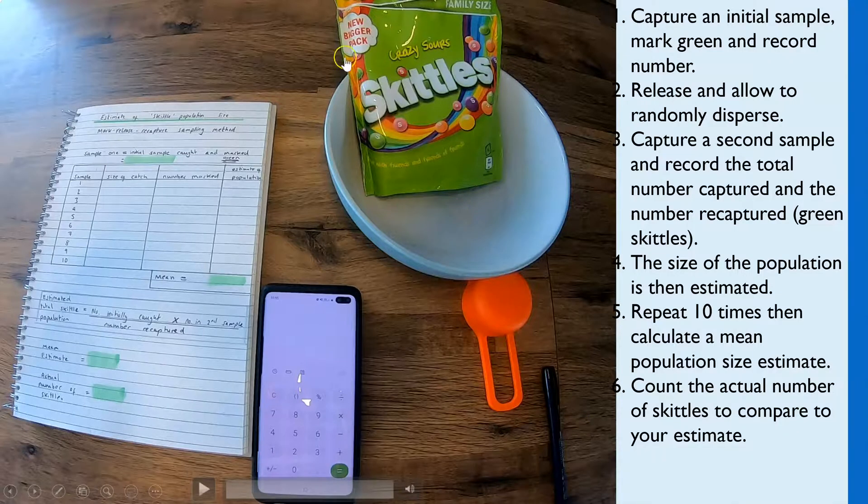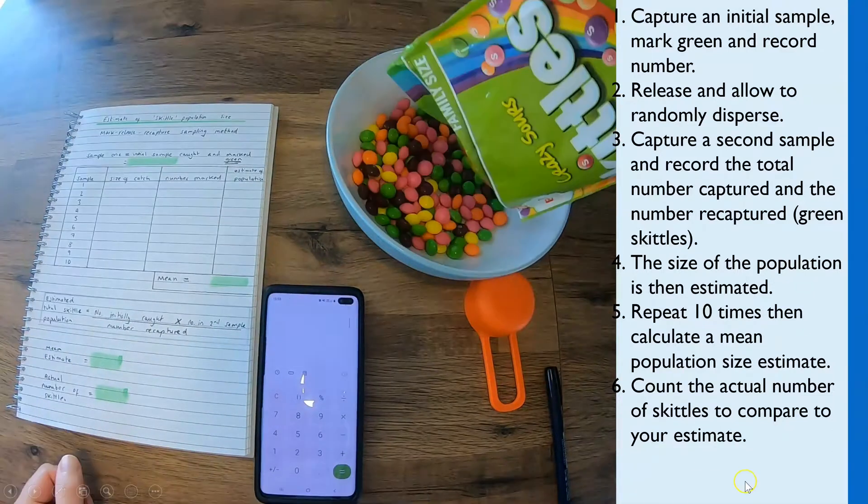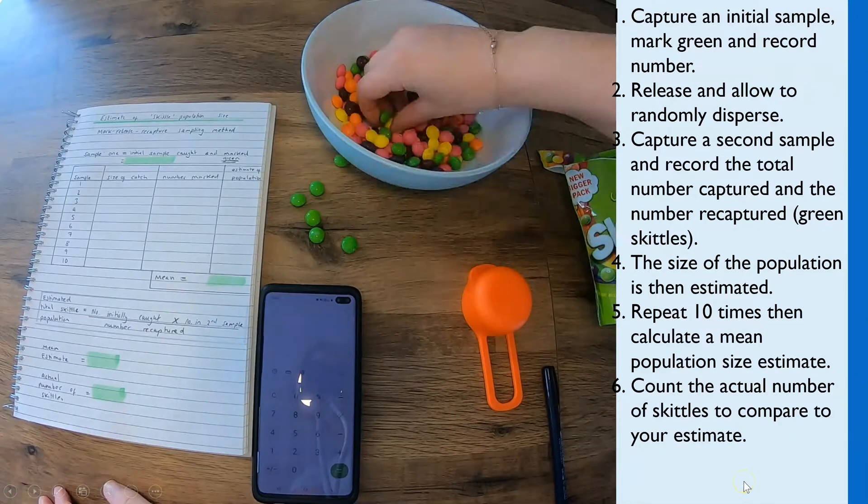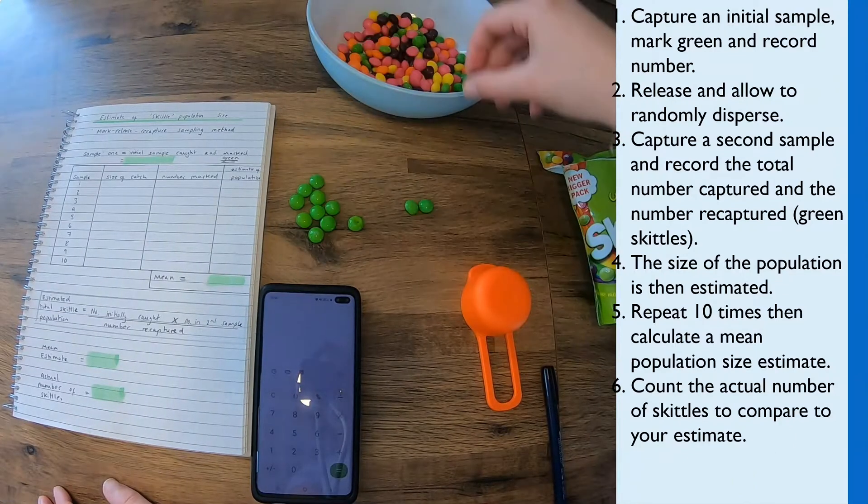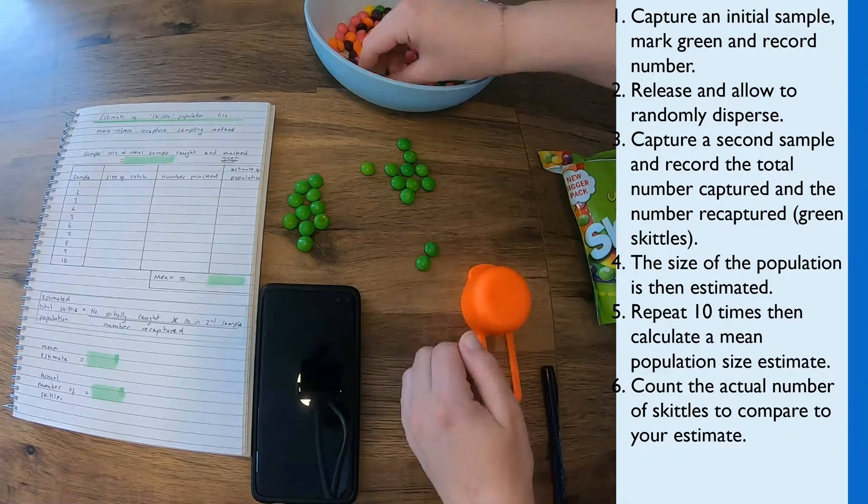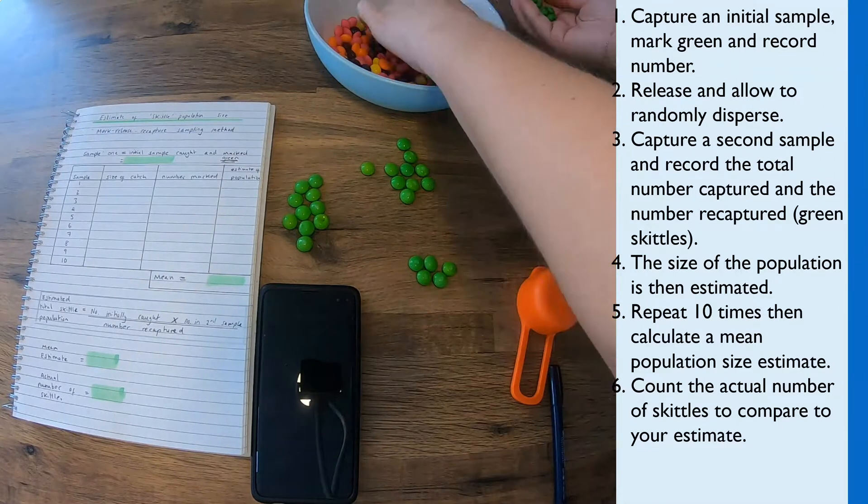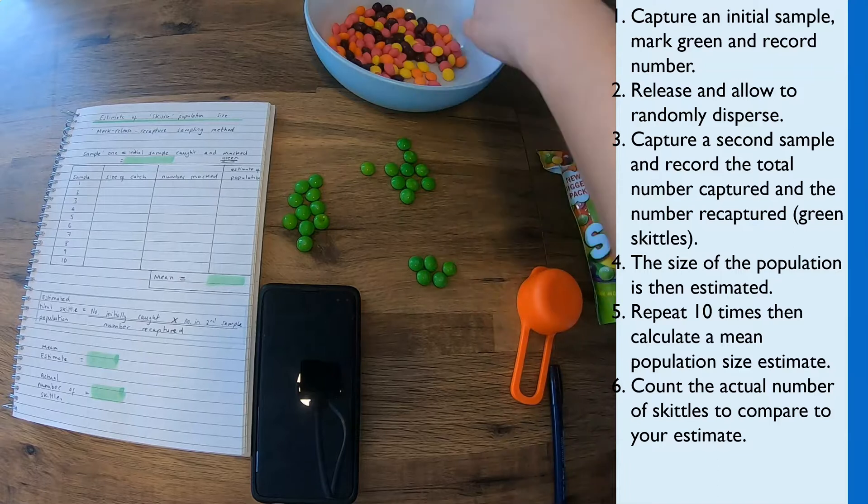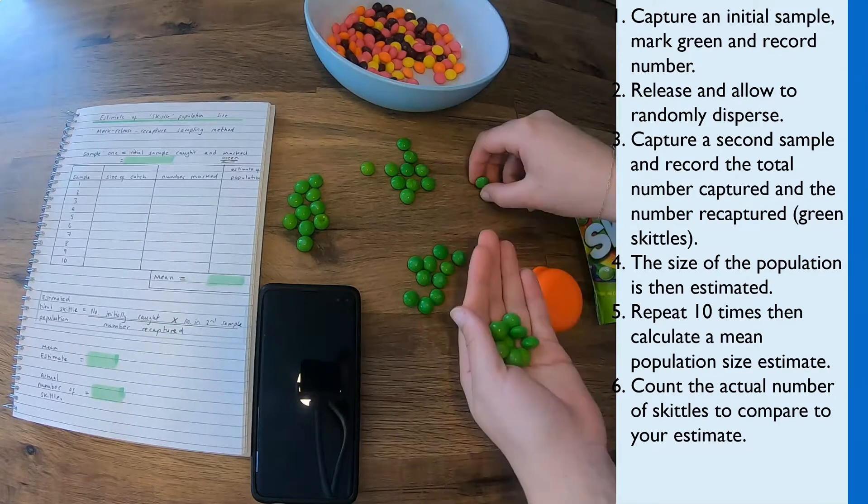The population that I have is a bag of Skittles, so these are going to be representing my animal population. So I'm going to go through the entire practical, and step one is where I'd have to capture my initial sample and mark them. So what I'm doing in this experiment is I've captured them and I've marked them green, so that's why in the video you can see I'm picking out all the greens, counting how many greens I have.